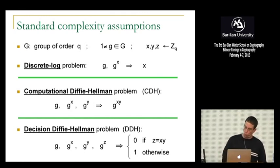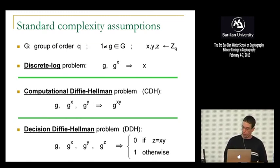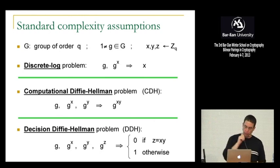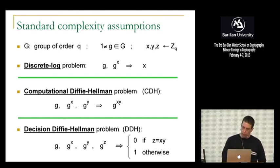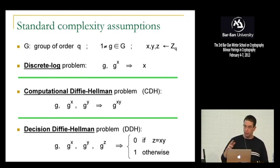CDH refers to the problem of actually computing the Diffie-Hellman secret G^{xy}. DDH refers to testing whether G^z is the solution to the CDH problem. That's the end of my high-level background. Now let's get into pairings.